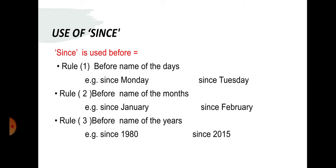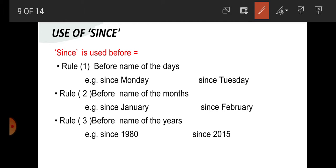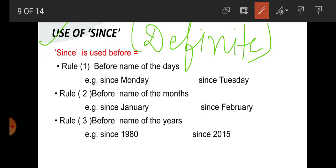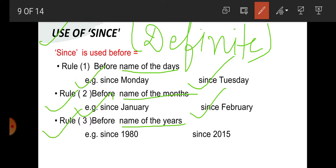We have read the use of for. Now we are going to read the use of since. Since is used with definite time. Rule 1: since is used before the name of the day, if the day is definite. For example: since Monday — day is definite; since Tuesday — day is definite. Rule 2: before the name of month, if the month is definite. For example: since January, since February. Rule 3: before the names of years. For example: since 1980 — the year is definite; since 2015 — year is definite. So since is used.